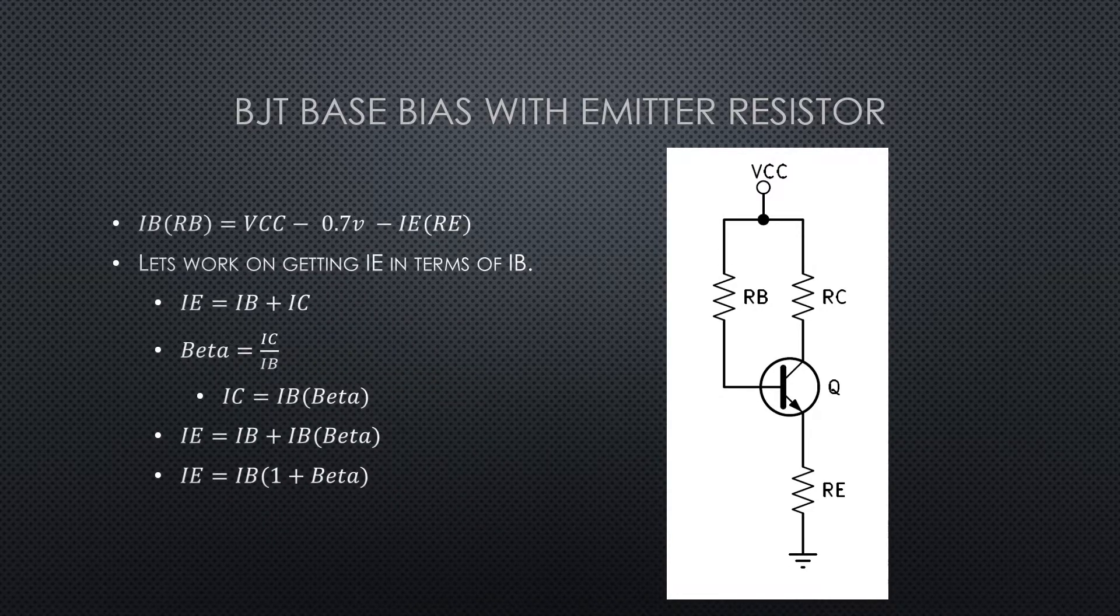We've got our equation down to two unknown currents, IB and IE. I really want to solve for IB, so is there a way I can get IE in terms of IB?